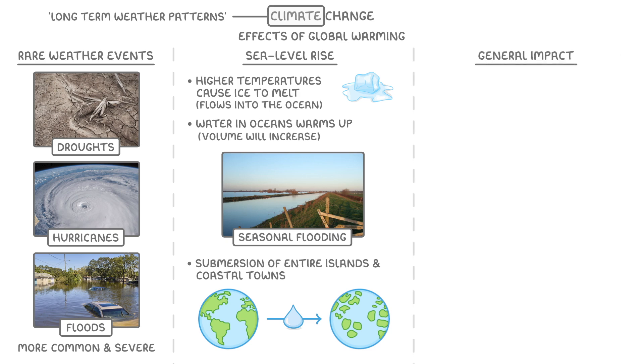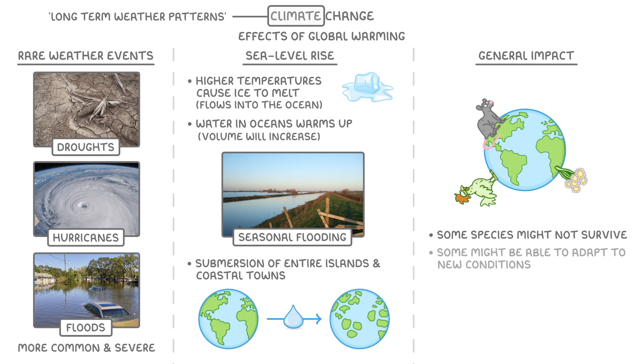Climate change will also have a more general impact on the wild organisms across the world. As temperatures and rainfall patterns change, species that were perfectly adapted to their environment might not be able to survive anymore. In some cases, species might be able to adapt to the new conditions, or maybe migrate to other regions where the conditions are a bit better. And we are seeing these things happen in some places already.